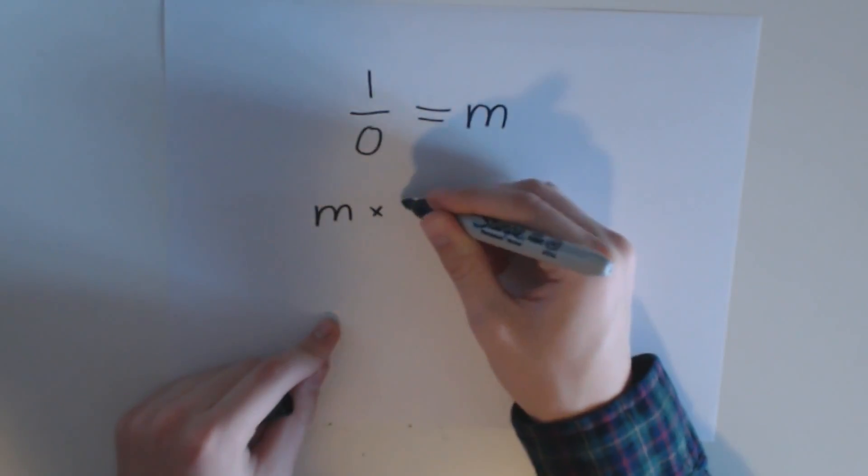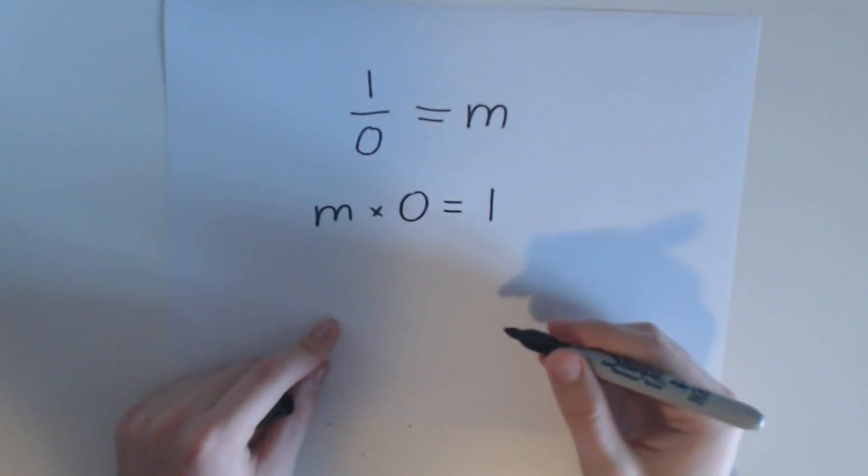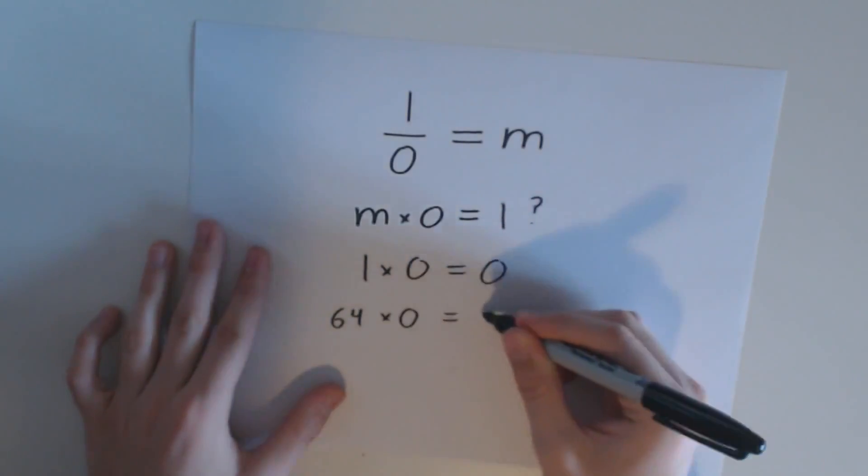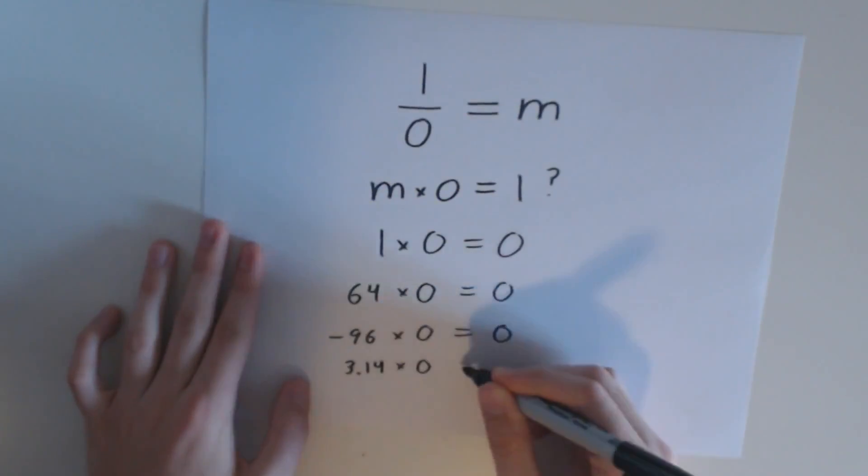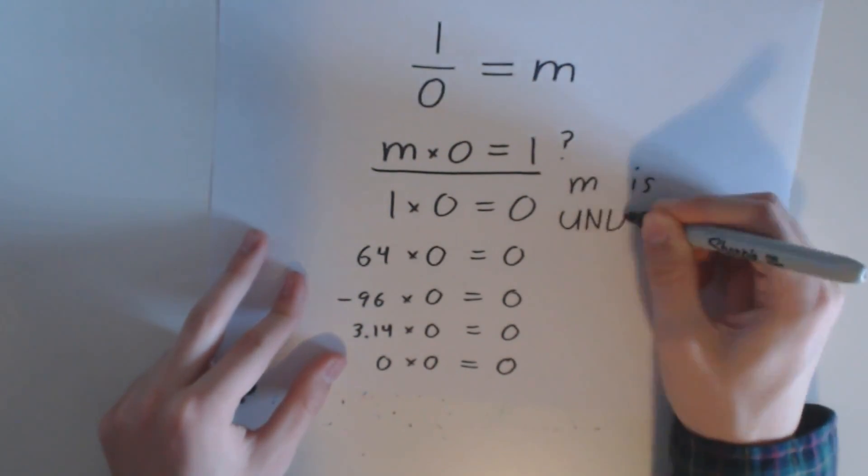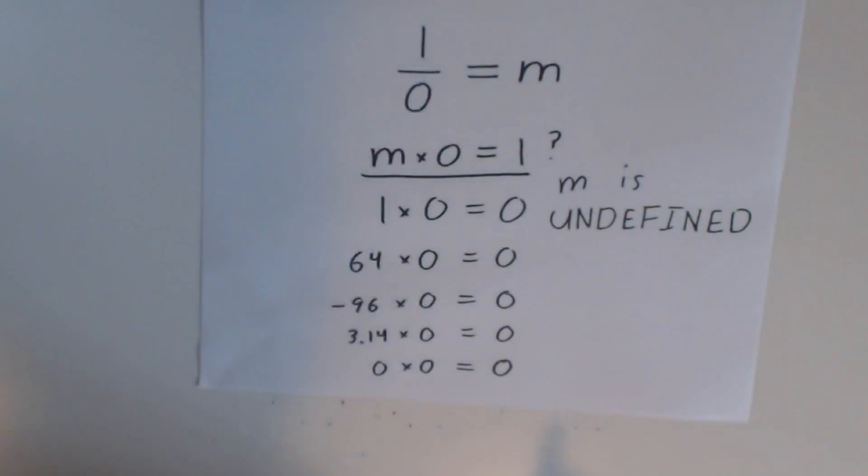We can reverse the equation to say something multiplied by 0 equals 1. You might realize that there's something wrong with this expression. We know for a fact that any number multiplied by 0 equals 0, so there's no value for m that can ever satisfy the equation. In this case, we say m is undefined.